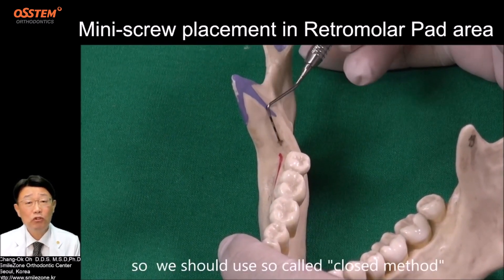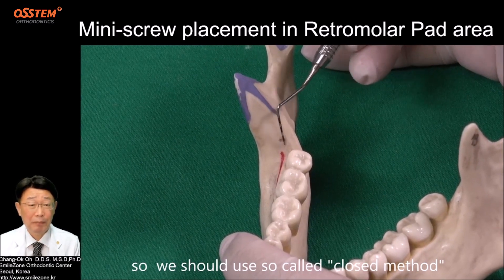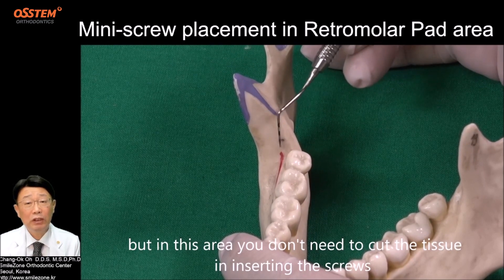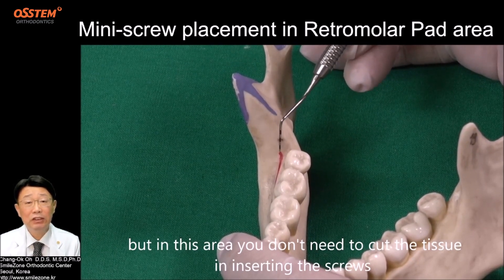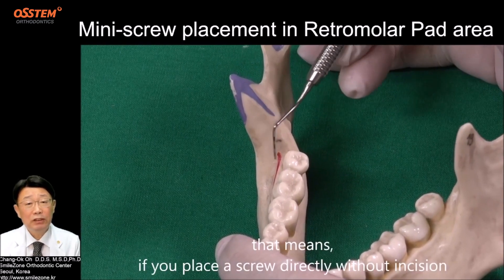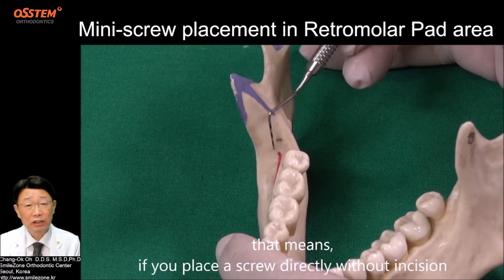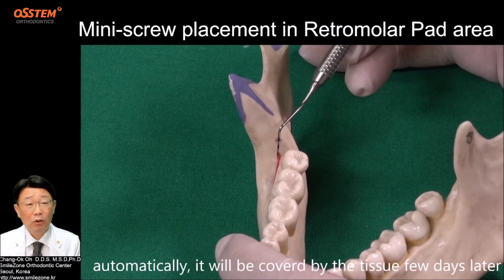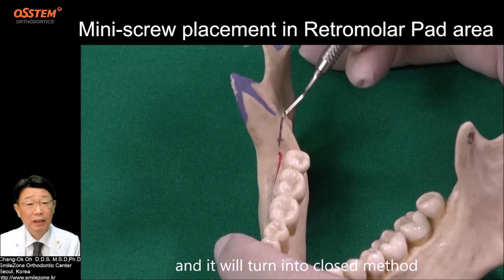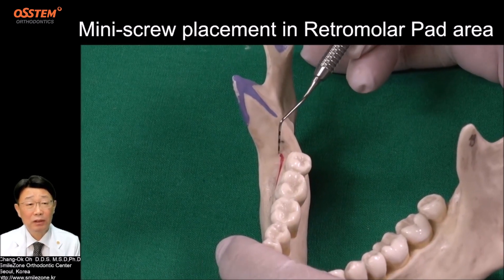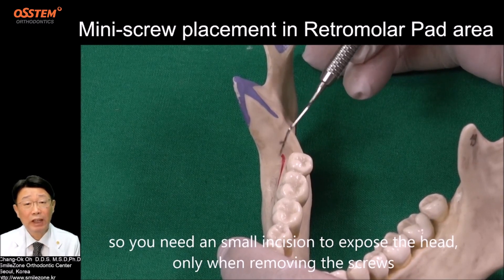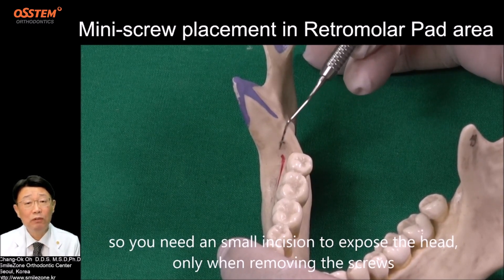So we should use the so-called closed method. But in this area, you don't need to cut the tissue when inserting the screw. That means if you place a screw directly without incision, it will automatically be covered by the tissue a few days later, turning into the closed method. So you only need a small incision to expose the head when removing the screw.